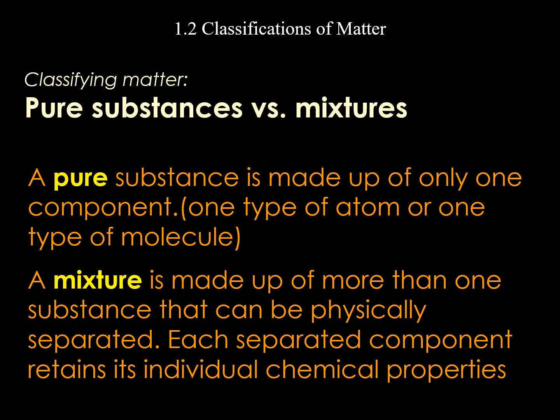Extending this: pure substances versus mixtures. A pure substance is made up of only one thing — for instance, pure water or NaCl. A mixture is made up of many things. We have homogeneous mixtures and heterogeneous mixtures, which we'll discuss. Mixtures can be separated, whether by hand, by filtration, by distillation, or many other methods.